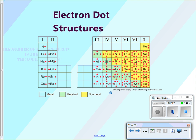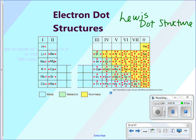The way that we write our valence electrons for a specific atom or element is going to be with an electron dot structure, also called the Lewis dot structure. The way it works is you are simply notating the number of valence electrons via dots around the symbol of the atom. For example, hydrogen has one valence electron — it's in the 1s orbital — so you write hydrogen with that one valence electron.